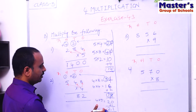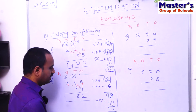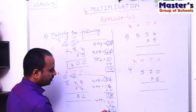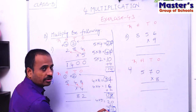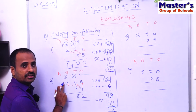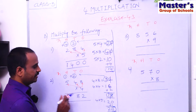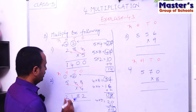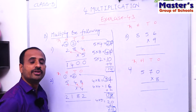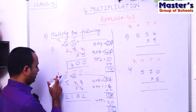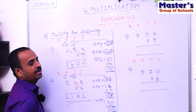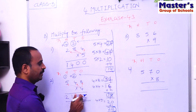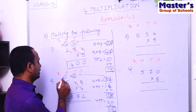The result is 21. There is no need to carry further because there is no thousands place. Write 1 under hundreds place and 2 under thousands place. The answer is 2192. In this way, if the product is a two-digit number, write the second digit under its place, carry the first digit to the next place, and add that carried number to the product.